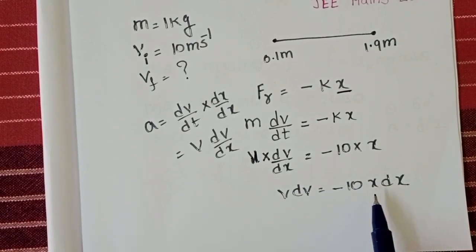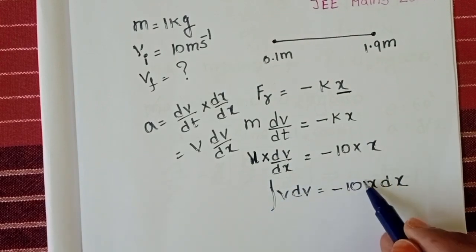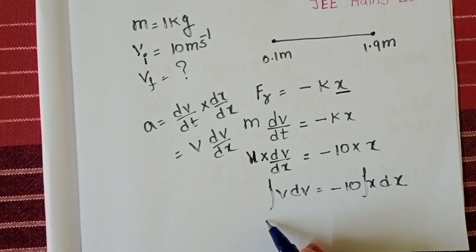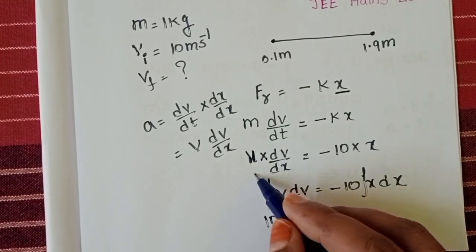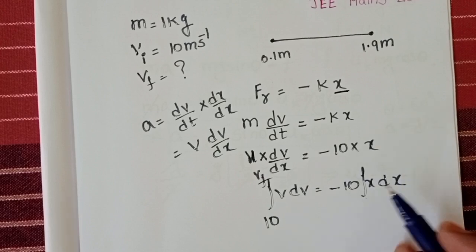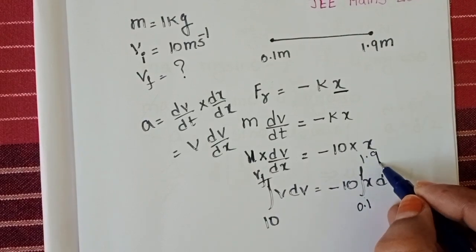Take integration on both sides to calculate the final velocity. Integral v dv equals integral x dx. Here limits are from 10 meter per second to final velocity. Let it be vf. And here distance range from 0.1 meters to 1.9 meters.